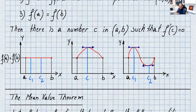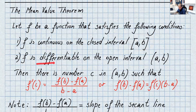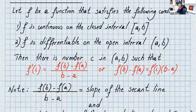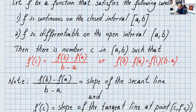Now let's see what the Mean Value Theorem is. We have a function again with the following conditions: f is continuous on the closed interval [a, b] and f is differentiable on the open interval (a, b). If that happens, then there is at least a number c in (a, b) such that f'(c) equals f(b) minus f(a) over b minus a. Or if you cross-multiply: f(b) minus f(a) equals f'(c) times (b minus a).